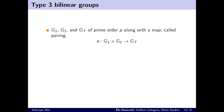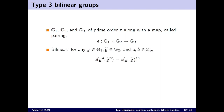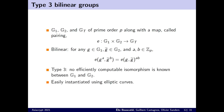Bilinear groups are a setting where we have three groups G1, G2, and Gt of prime order P, and a map E that sends a pair from G1 cross G2 into Gt. The bilinearity property of E shows that this map can be used to perform a multiplication in the exponents. In the type 3 setting, we assume that there is no isomorphism between G1 and G2. As many modern schemes, we use this type 3 setting, which is very efficient.